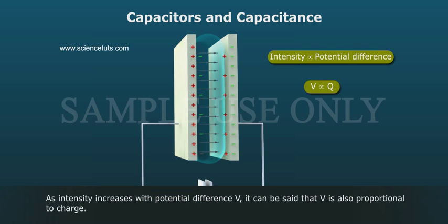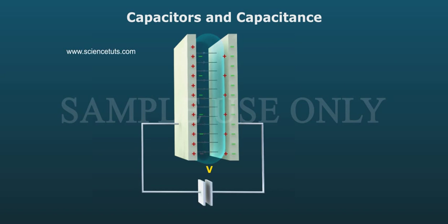As intensity increases with potential difference V, it can be said that V is also proportional to charge. V is directly proportional to Q.